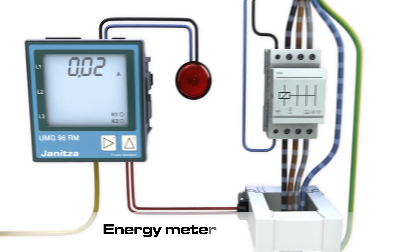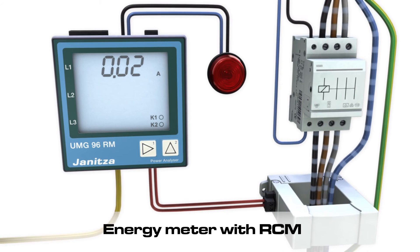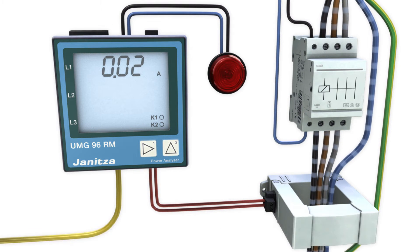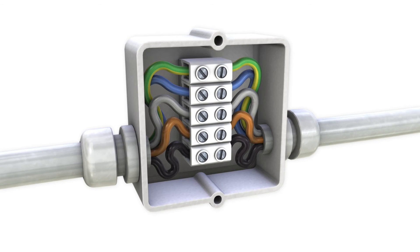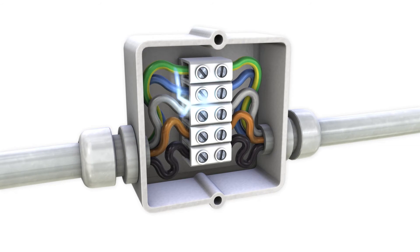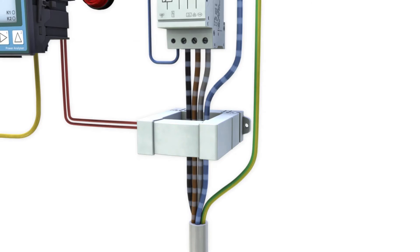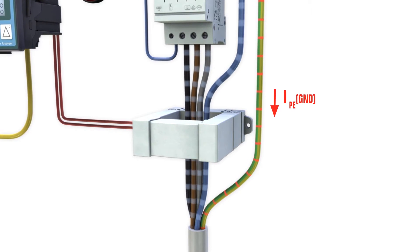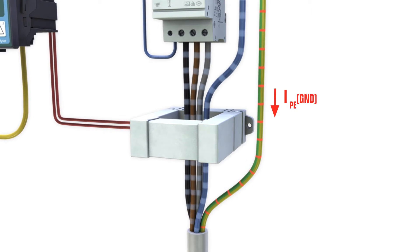Utilize existing infrastructure and extend your system with residual current monitoring. That is how you will reliably identify beginning insulation faults long before they are noticed as a disruption, or in extreme cases result in fire.